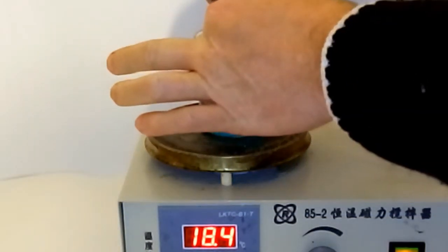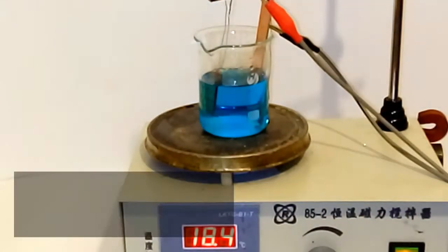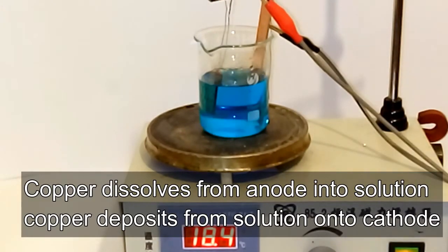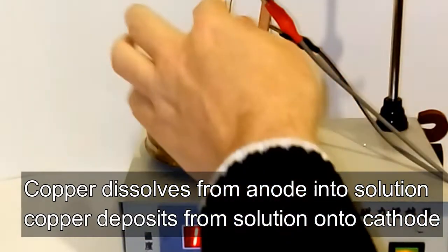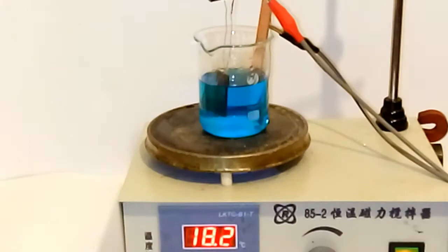Simply the copper will be dissolving off of the anode onto the cathode. The net reaction for the electrolyte will be zero so the electrolyte will last for quite some time.